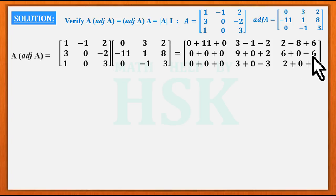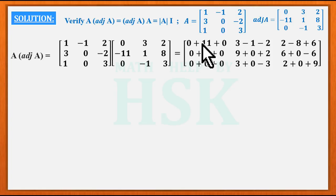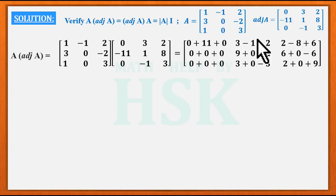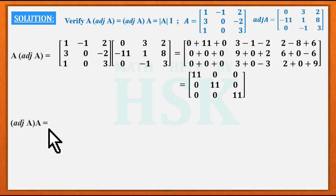Completing the multiplication: 0 and -2×3=-6; next row: 1×0=0, 0×(-11)=0, 3×0=0; 1×3=3, 0×1=0, 3×(-1)=-3; 1×2=2, 0×8=0, 3×3=9. Taking the total of each position: the diagonal entries each sum to 11, and all off-diagonal terms equal 0. So A into adjoint of A equals the matrix 11 0 0 / 0 11 0 / 0 0 11, which is 11·I.